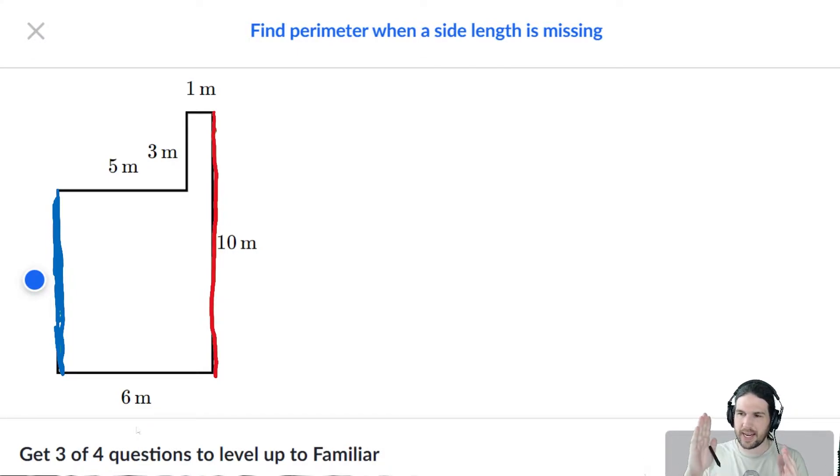What else do we know? Well, if we kind of squash this together, we notice that this three meters plus whatever the blue is is going to equal a total of 10. This is like a perimeter problem inside the perimeter problem.